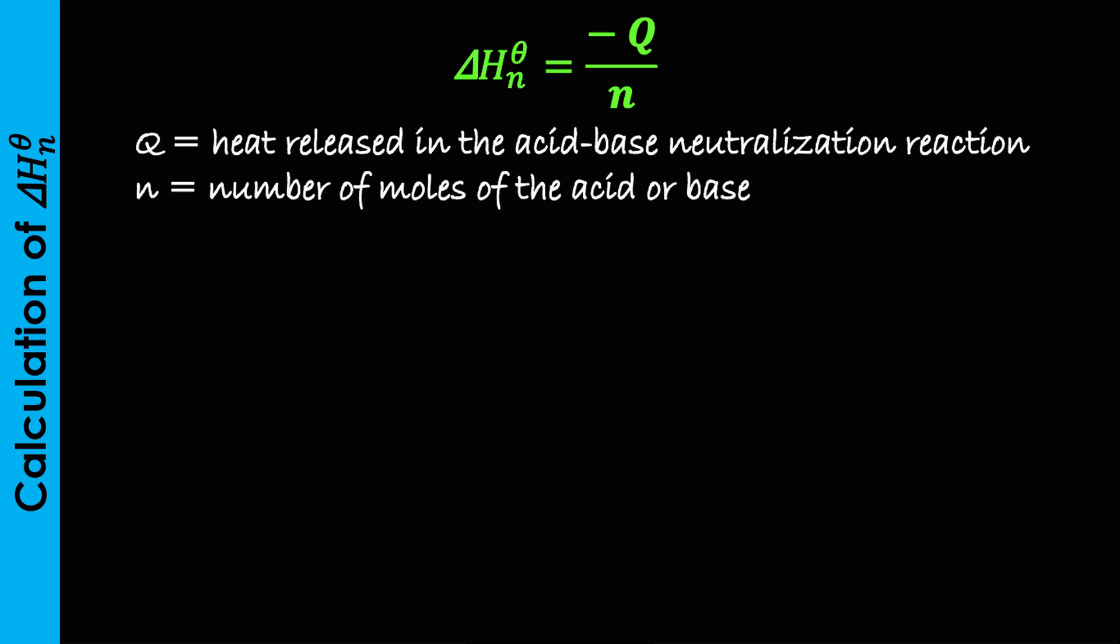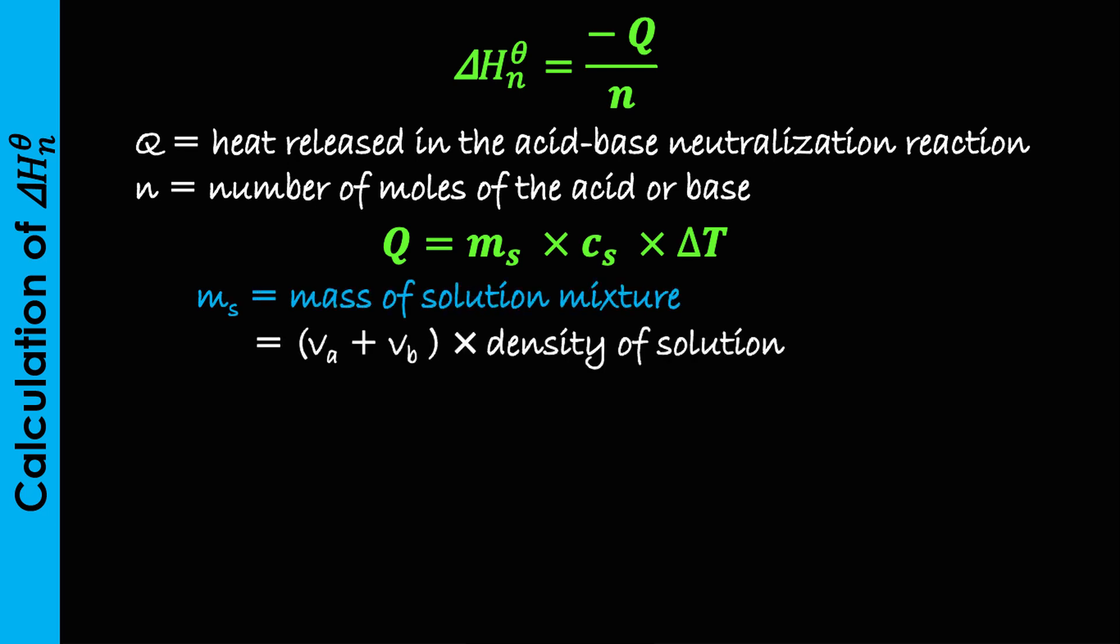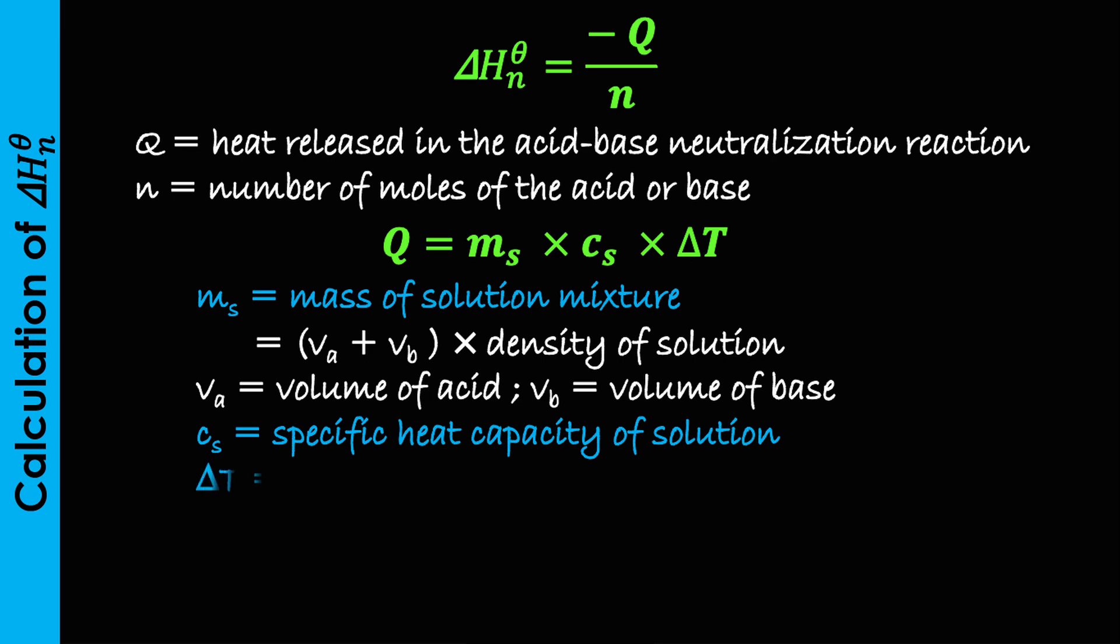As usual, to evaluate Q, we use Q equals to ms times Cs times delta T. Where ms is the mass of the solution mixture obtained by adding the volume of the acid and the base to get the volume of the solution, then multiplying by the density of the solution in grams per cm cube. Cs is the specific capacity of the solution and delta T is the change in temperature calculated as T2 minus T1.